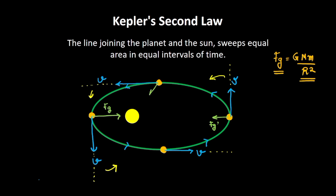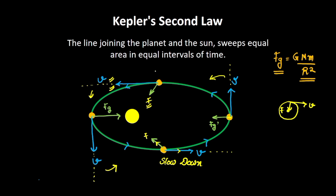When the planet is at the far position, the force and velocity vectors are not perpendicular — in fact, the force is partially opposing the velocity, so the planet slows down. It keeps slowing down until it reaches the far extreme. After that point, the force vector aligns more with the velocity direction, so the planet speeds up, reaching its highest speed when it is closest to the star.